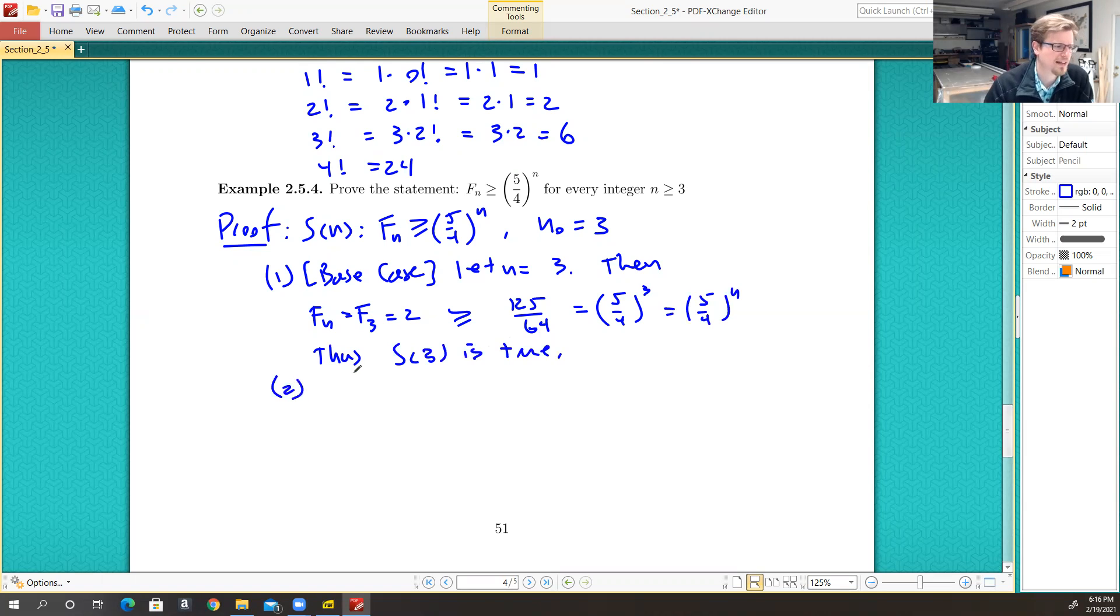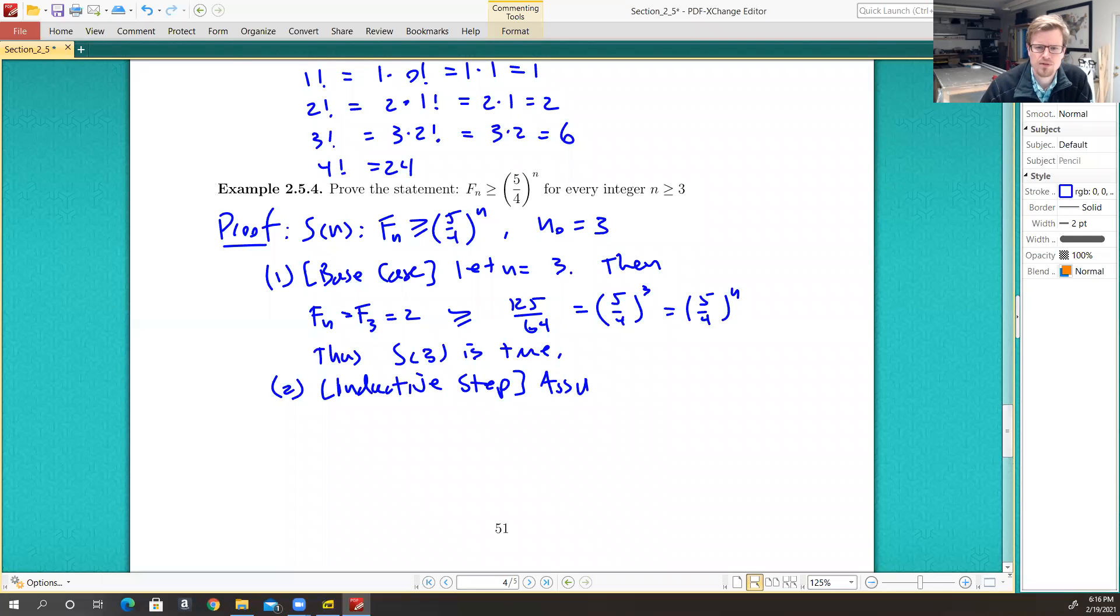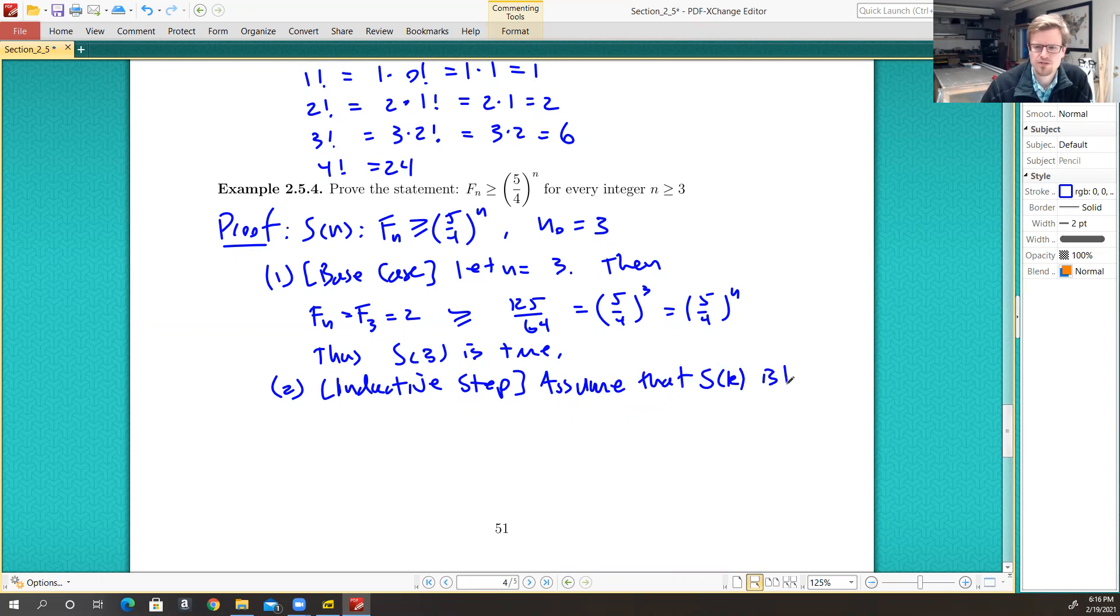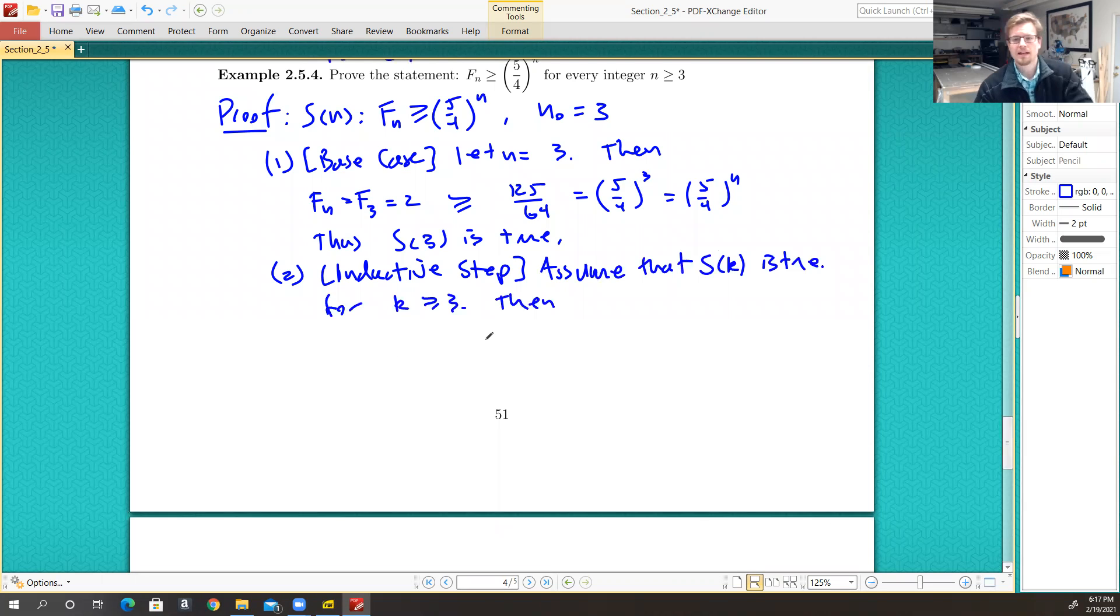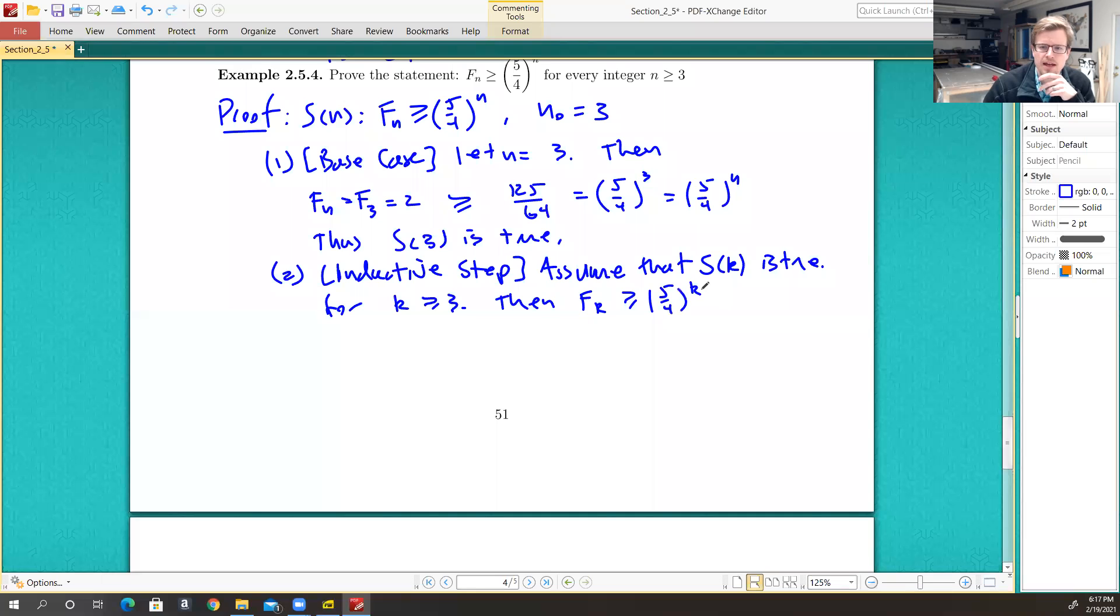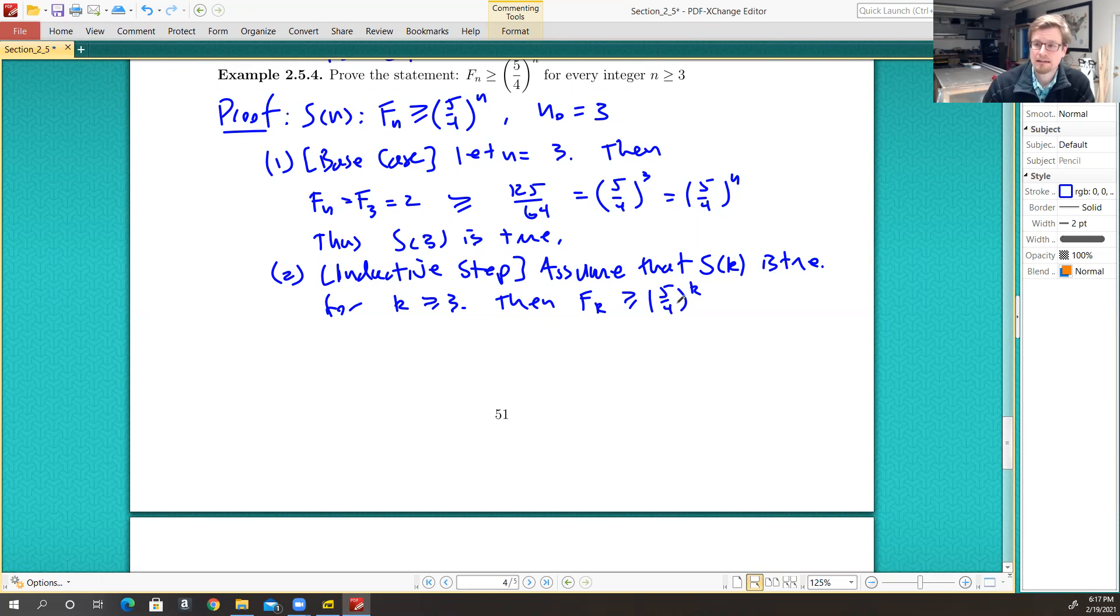So let's look at the inductive step. For the inductive step, we want to assume that S of k is true for k being some integer greater than or equal to 3. Then we have that F sub k is greater than or equal to 5 quarters to the k. We're assuming that S of k is true, and that's what S of k is.